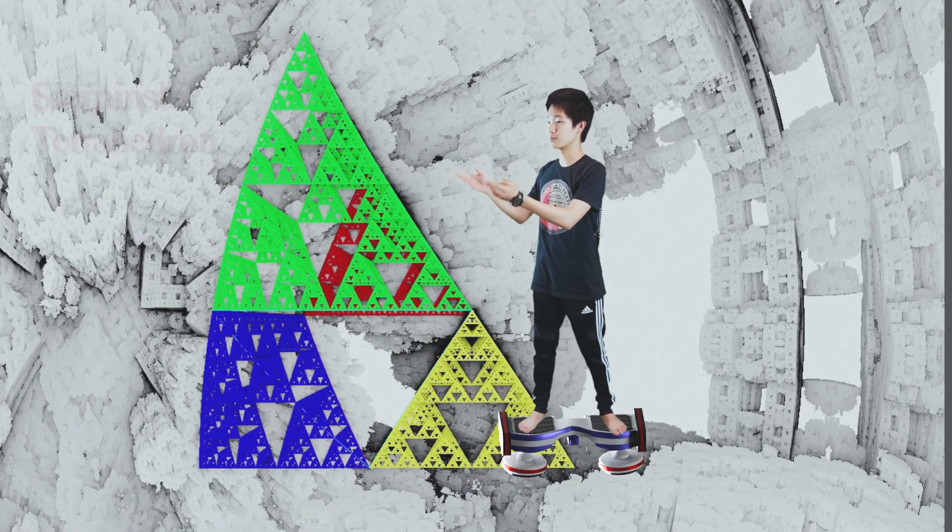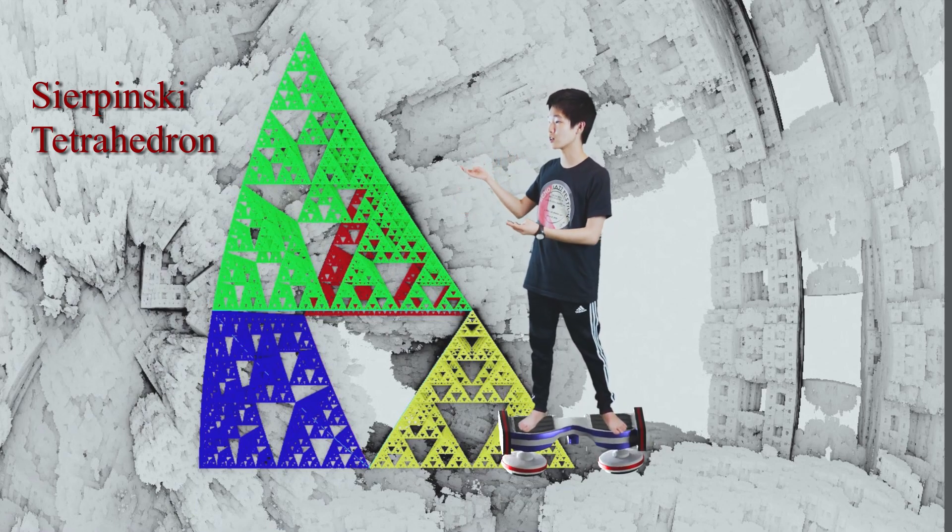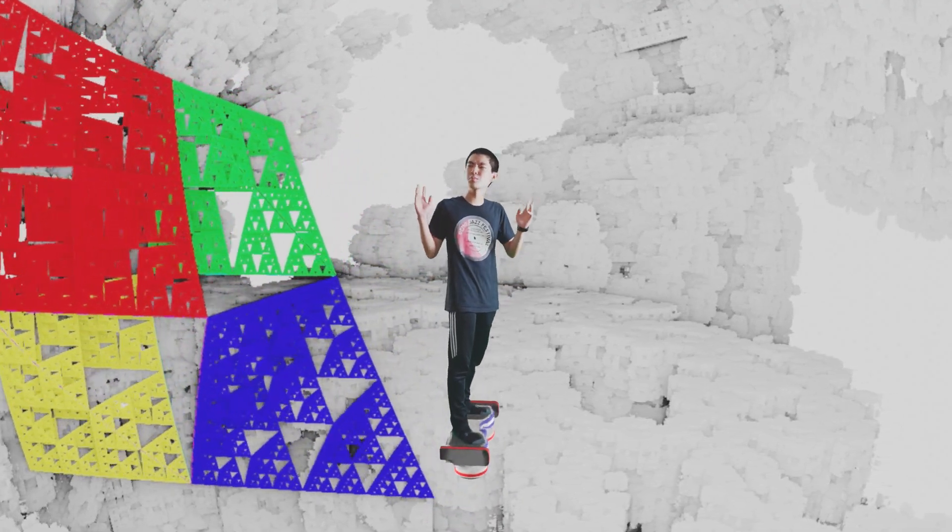In mathematics, a shape that is self-similar is called a fractal. Take this shape for example, called a Sierpinski tetrahedron. This shape is perfectly self-similar because it's composed of four smaller shapes, each of which are identical to itself. Alright, that's cool, but a little too predictable, eh?